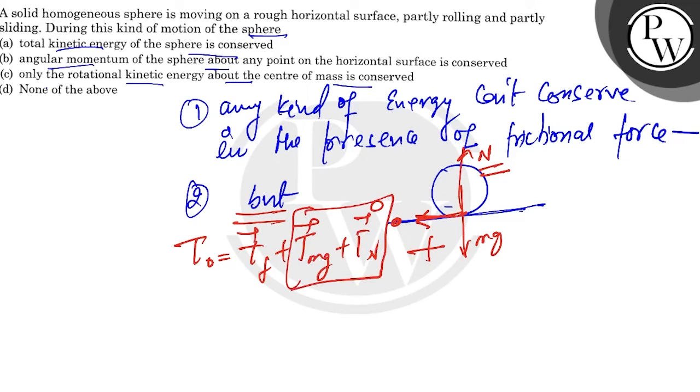But this is action-reaction, so this torque will cancel out. So the torque about O is nothing but the torque of friction, but this will also be zero because the action line is passing from the axis of rotation.